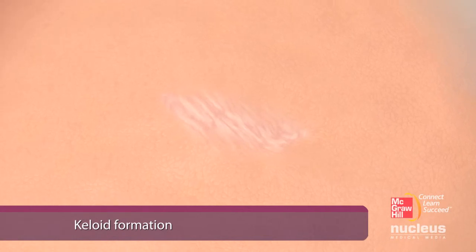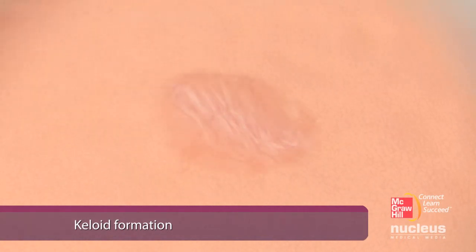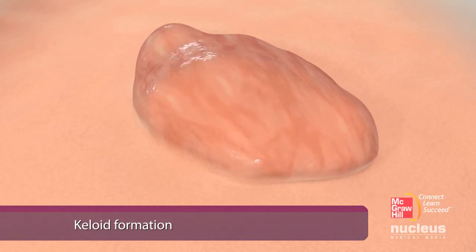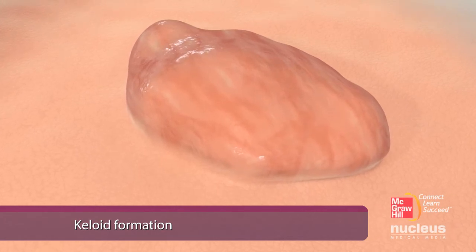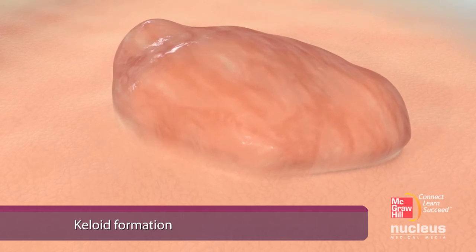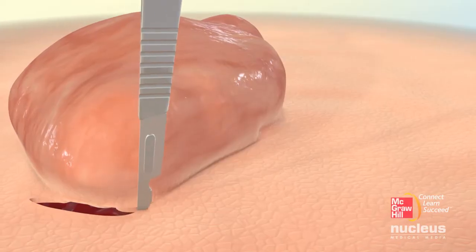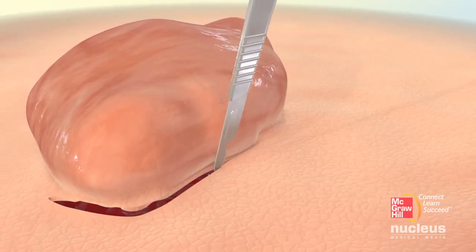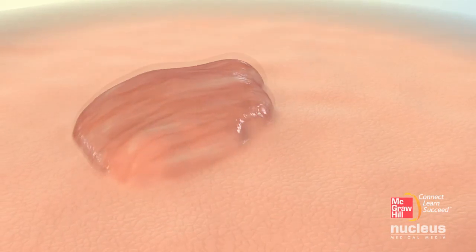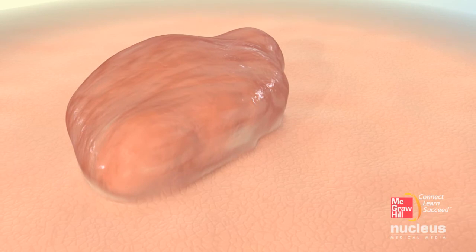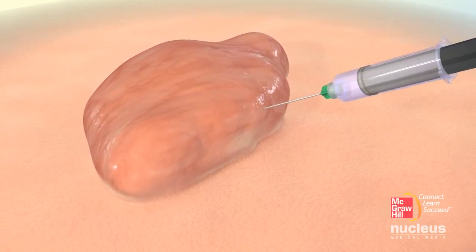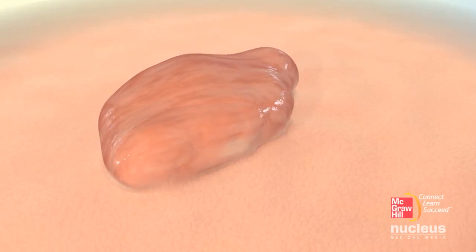One possible complication of wound healing is keloid formation. A keloid results from an overgrowth of granulation tissue extending beyond the borders of the original wound. Composed of mostly collagen, keloids are slow growing. They do not regress spontaneously and tend to reoccur after excision. A common initial treatment for keloids includes multiple injections of corticosteroids to help reduce the size of the scar.